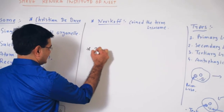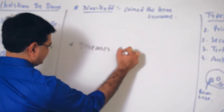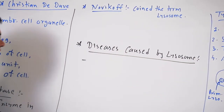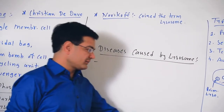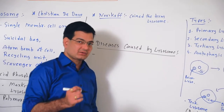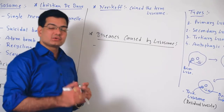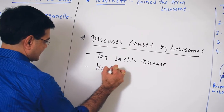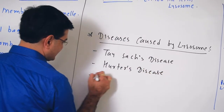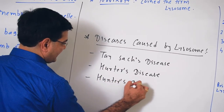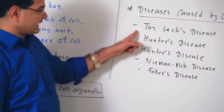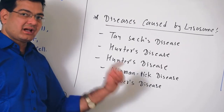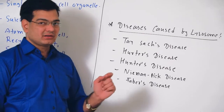Some diseases are caused by the lysosome. Remember that these diseases are caused by the residual vesicle itself. Residual vesicles are the remnants, and if they remain in the cell, they induce some diseases like Tay-Sachs disease, Hurler's disease, Hunter's disease, Niemann-Pick disease, and Fabry's disease. These diseases are caused by the residual vesicle or the tertiary lysosome.